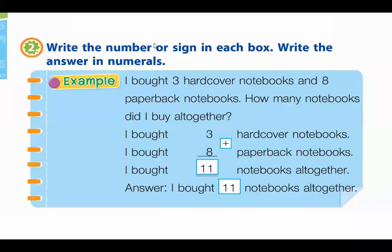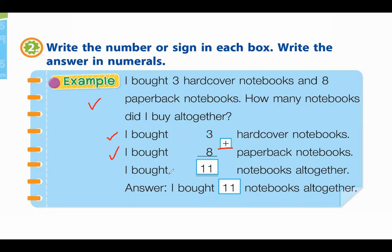Write the number sign in the box and then write the answer in numerals. Example number one: I bought 3 hardcover notebooks and 8 paper bag notebooks. How many notebooks did I buy altogether? I bought 3 hardcover notebooks plus 8 paper bag notebooks. I bought 11 notebooks altogether.